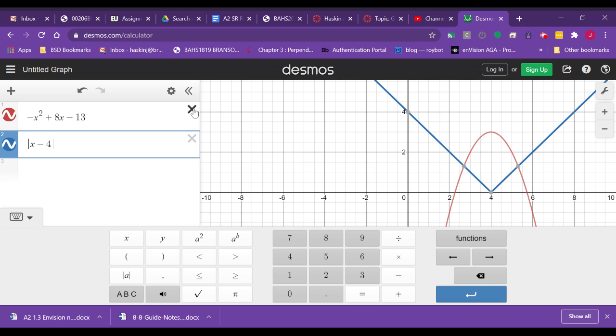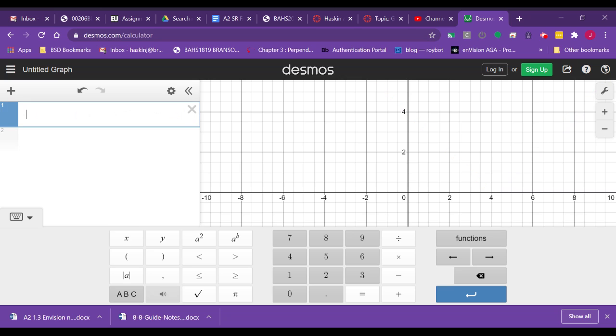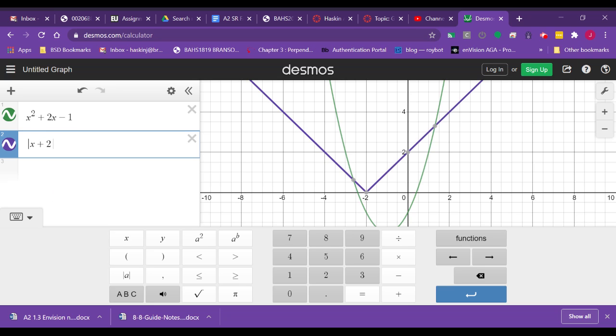We wanted to do another one. I can just clear this, clear this. The next example on the notes was x squared plus 2x minus 1. That was the first equation, parabola. Hit enter. My second equation is an absolute value. So inside the absolute value was x plus 2, and then plus 2 on the outside. I can see it graphs right there. It intersects right there. So that is at approximately negative 3.3.